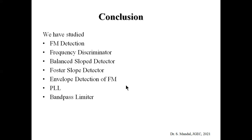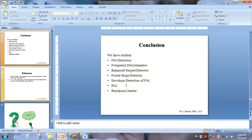In conclusion, in this class we studied different FM demodulation techniques: frequency discriminator, balanced slope detector, Foster-Seeley (phase) detector, envelope detector, and the operation of PLL and how it can be used as an FM demodulator. Lastly, we studied the bandpass limiter used to suppress amplitude variation of the FM signal. Thank you — if you have any questions, please post them.